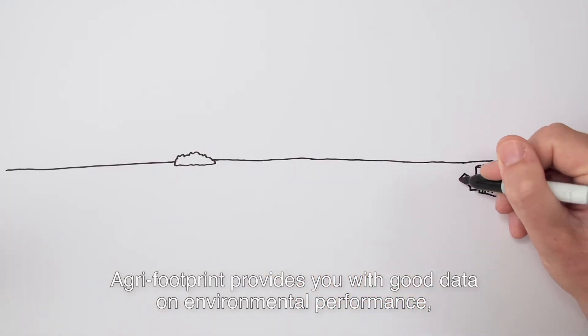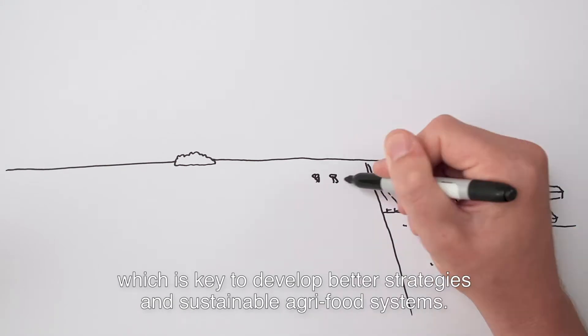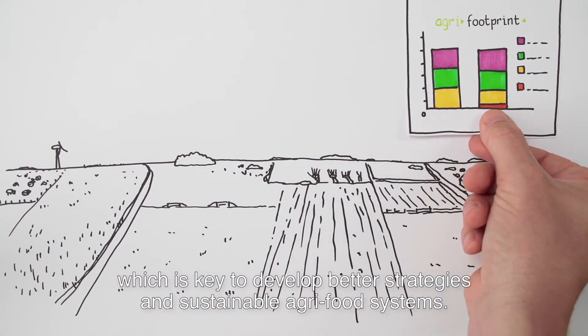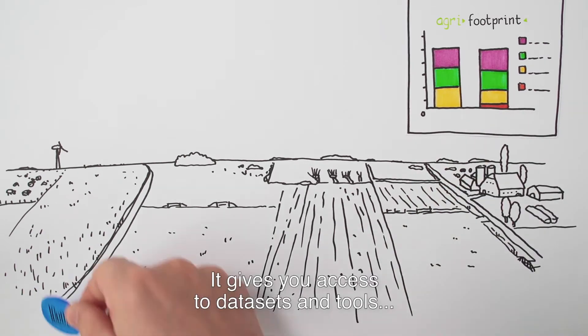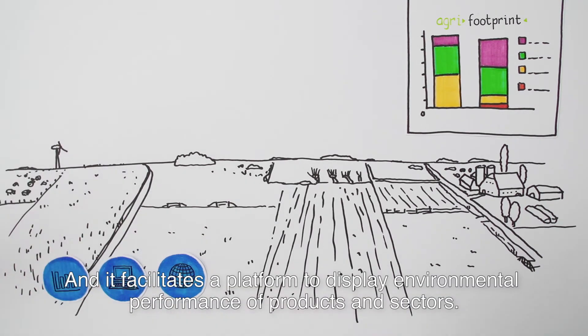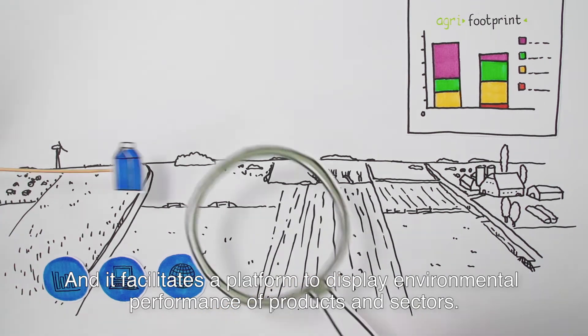AgriFootprint provides you with good data on environmental performance, which is key to developing better strategies and sustainable agri-food systems. It gives you access to data sets and tools to make assessments on better performance easy, and it facilitates a platform to display environmental performance of products and sectors.